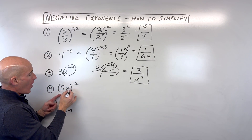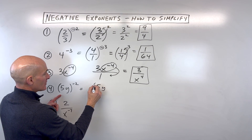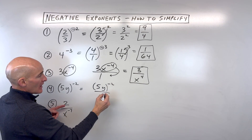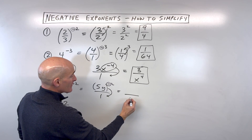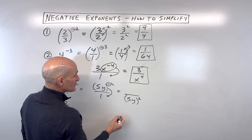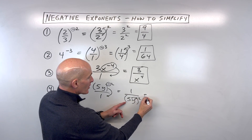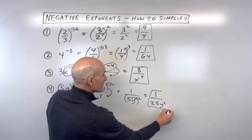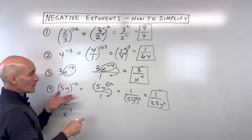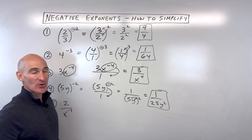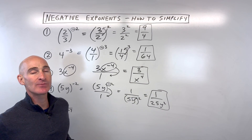Let's look at number four — this one's a little different because we have the quantity 5y to the negative two. We can think of this as 5y to the negative two, all divided by one. When I see that negative exponent, it tells me to move that quantity to the other side of the fraction bar and make it a positive exponent. So this becomes 5y to the positive two in the denominator — there's nothing left in the numerator, so that's understood to be one. Now we can say 5 squared is 25 and y squared, giving us 1 over 25y squared. Remember, you always want to have a positive exponent in your final answer — negative exponents are considered improper.